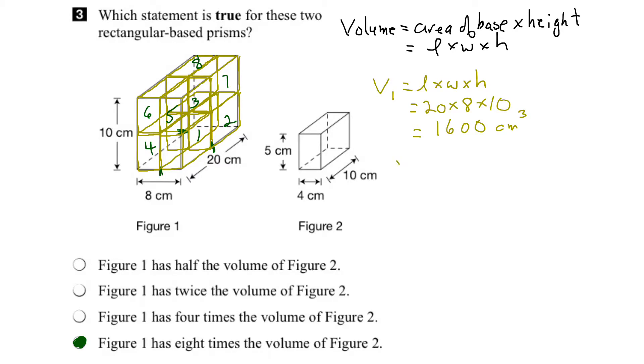Now let's calculate the volume of the smaller rectangular-based prism. Again, the volume would be length times width times height. Length for this one is 10 centimeters, width is 4, and height is 5. So if we put those in, 10 times 4 times 5. And 10 times 4 is 40 times 5 will give us 200 centimeters cubed.